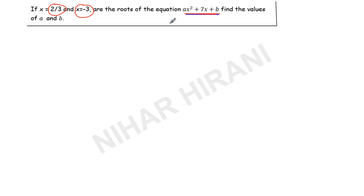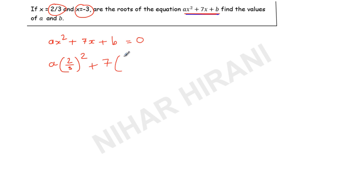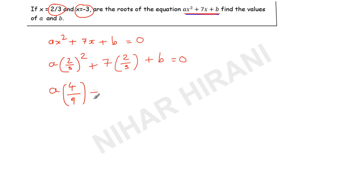I will first copy this equation, and that equals 0 because these are the zeros of this equation. Now instead of x I will write 2/3. So a(2/3)² + 7(2/3) + b = 0. Now according to the order of operations you must do the power first — you cannot multiply a and 2 and then square. So 2² is 4, 3² is 9, giving 4a/9 plus 14/3 plus b equals 0.